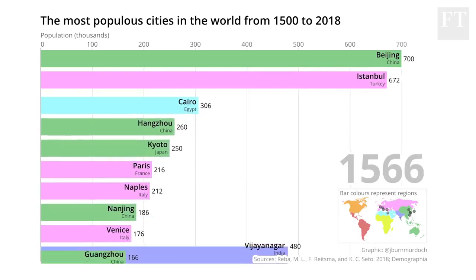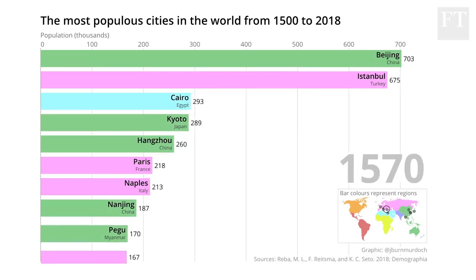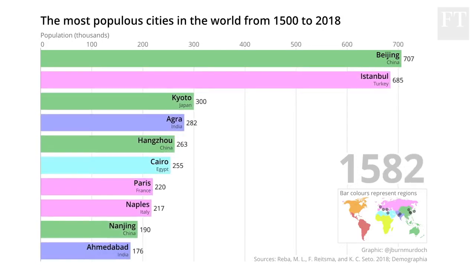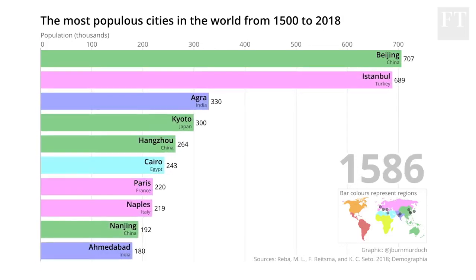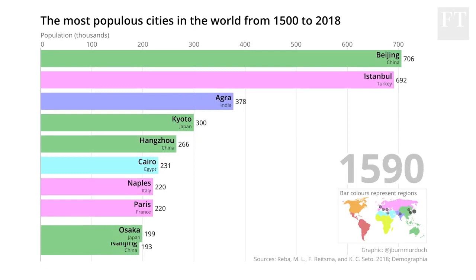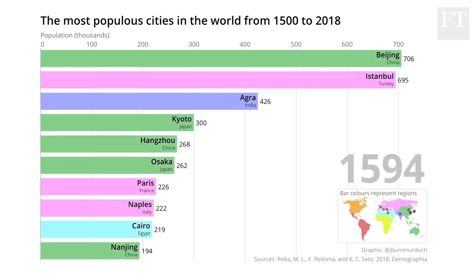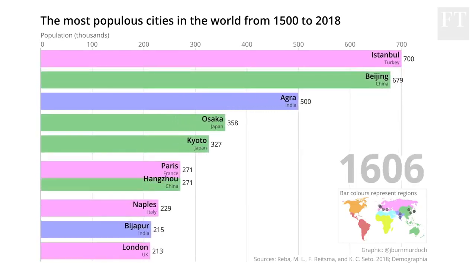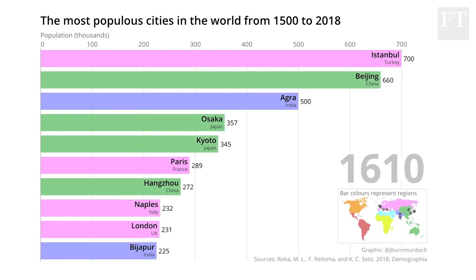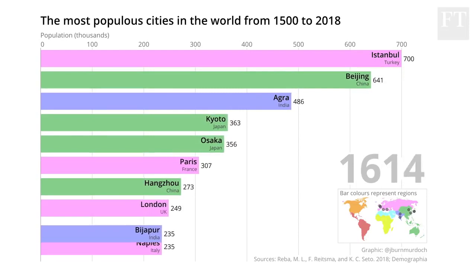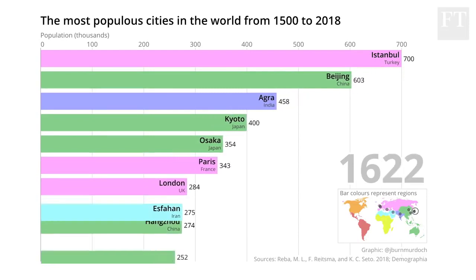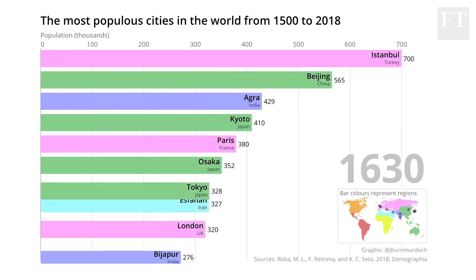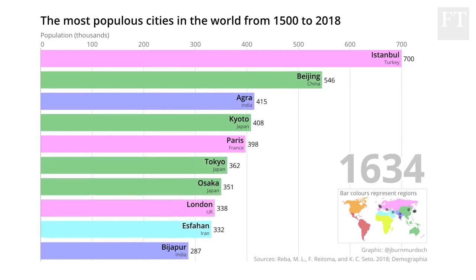As that century went on, Beijing went from being the largest city in the world to being encroached upon by Istanbul, which then took the lead around 1600. India and China are again dominating here, but note how Paris, London and Naples joined the ranks as other major European cities.